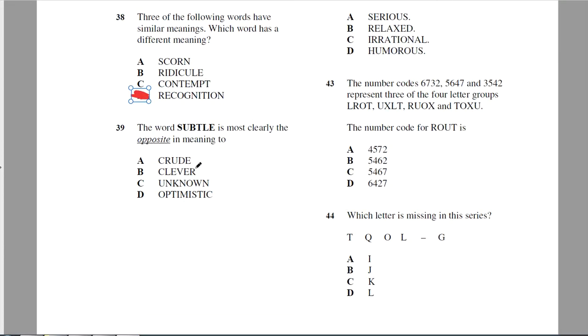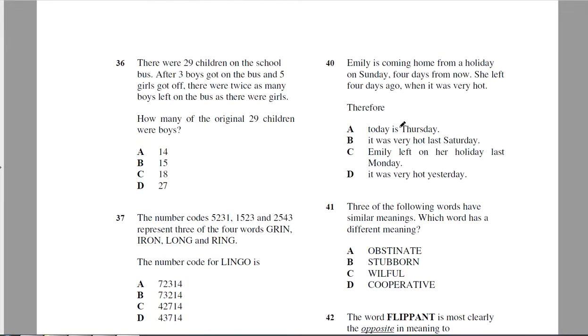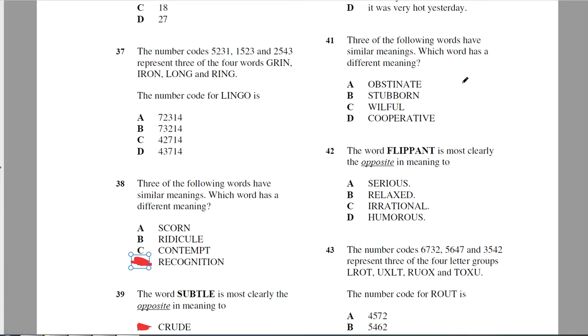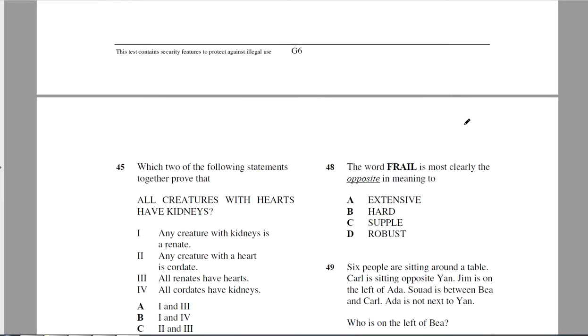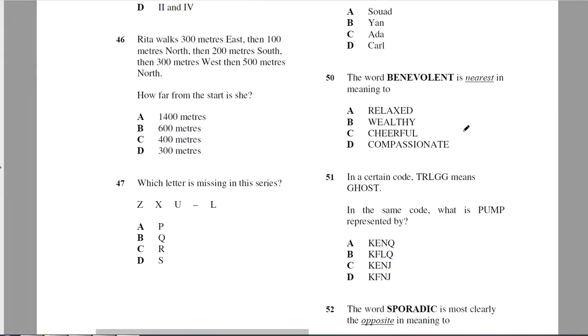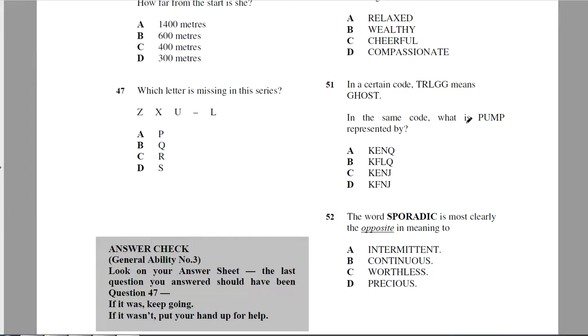Subtle is the opposite of crude, because subtle means gently. Three of the following words have similar meanings. Which word has a different meaning? Obstinate and stubborn and willful. Yeah, deliberately willful, so cooperative is the one. Flippant is most nearly the opposite of serious.